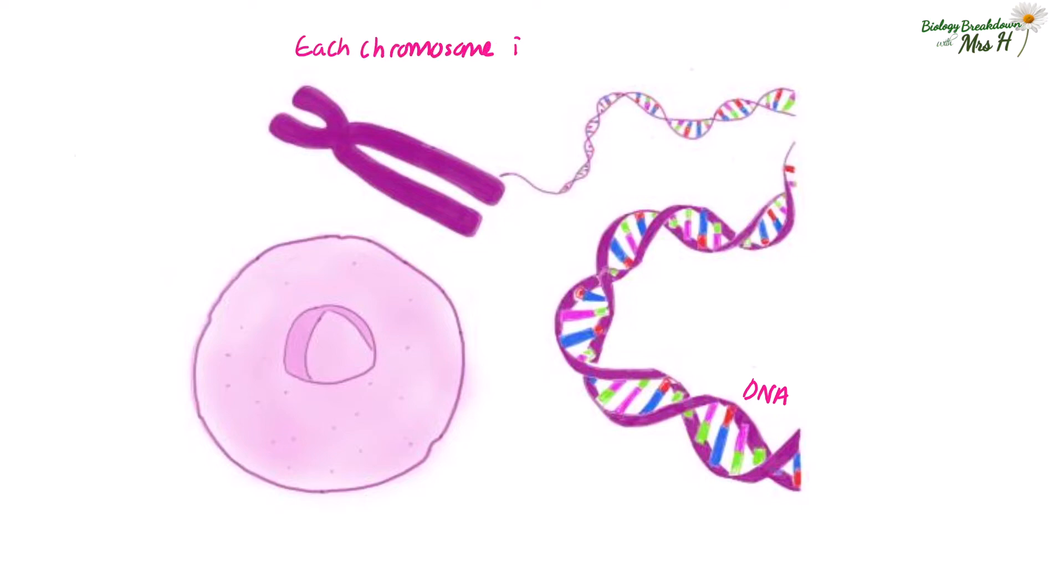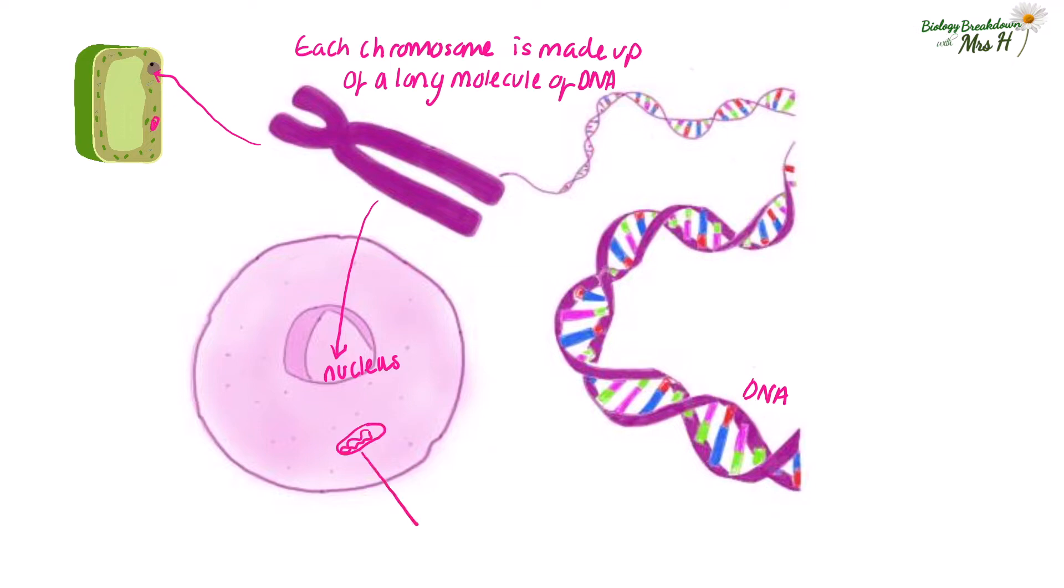Most of the DNA is found packaged as chromosomes in the nucleus of a eukaryotic cell. Some DNA is found in mitochondria and in the chloroplasts, and in prokaryotic cells they will have their DNA loose in the cytoplasm.